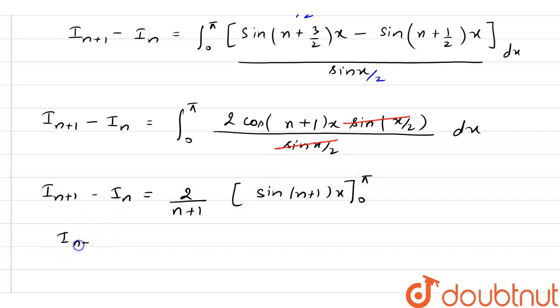If I put pi here and if I put 0 here, in any circumstances, if you put upper limit and lower limit, your answer is 0. So I can say I_{n+1} is equal to I_n.